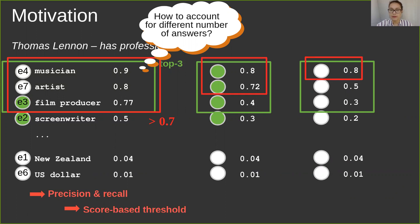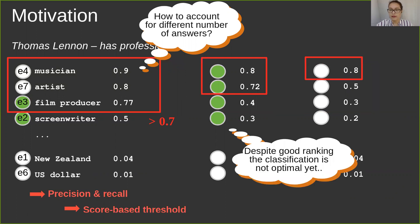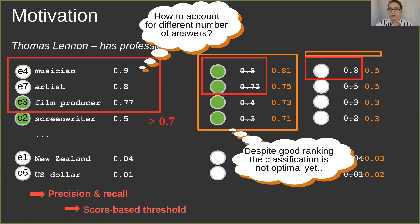In the second example, we see a perfect ranking where all of the correct entities land at the top of the rank, but the classification quality could be improved. Let us assume that the model scored the entities differently with the orange numbers. Now all of the scores across different queries are in accordance with one threshold. This illustrates the extra challenge to the model that now needs to not only rank the answers correctly, but to calibrate scores as well.